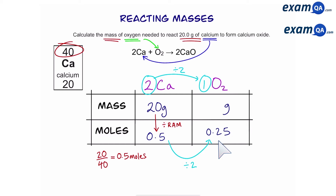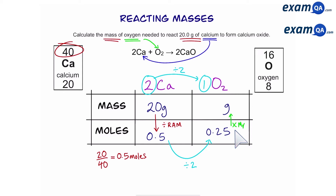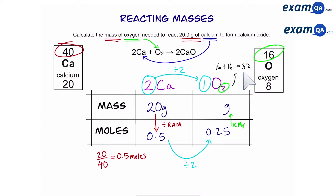The final part is to convert moles back into mass — this time we're going to multiply by the MR. Looking at the periodic table, oxygen has a mass of 16 — always the big number. However, in this molecule O2, there are two oxygens, so we add them together and that gives you 32. The MR of oxygen is 32. So 0.25 times 32 gives you 8 grams. The final answer is: if you have 20 grams of calcium, you're going to need 8 grams of oxygen.